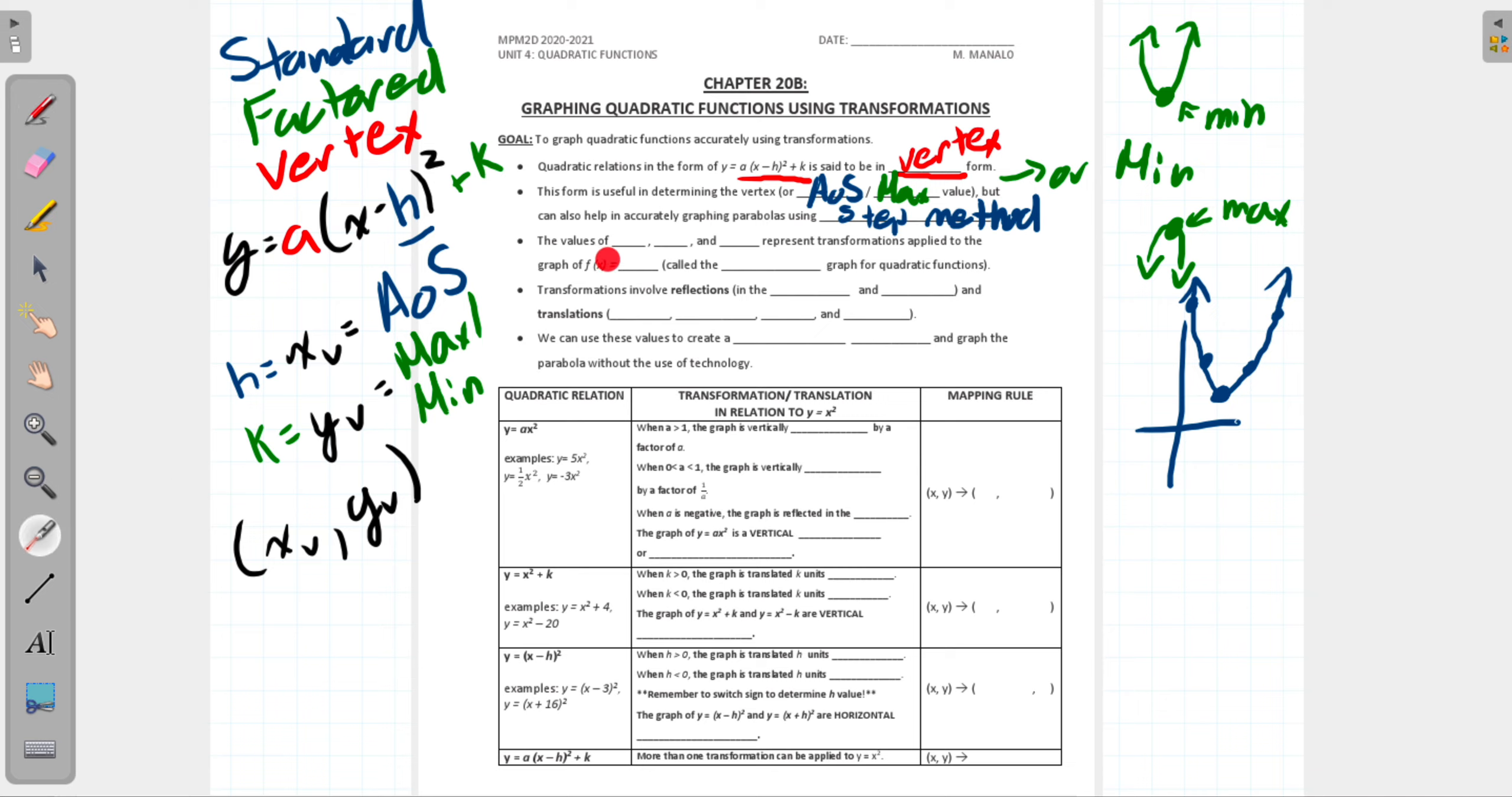The next set says the values of blank and blank and blank represent transformations applied to the graph of f(x). The values of h, k, and a represent transformations applied to the graph of f(x). All they're talking about is the original quadratic, which is just f(x) equals x². Whenever we're doing graphing of a quadratic, we're always referencing a quadratic that has a vertex at the origin.